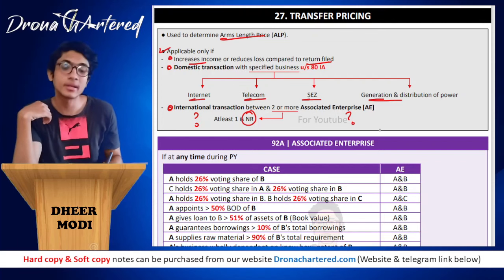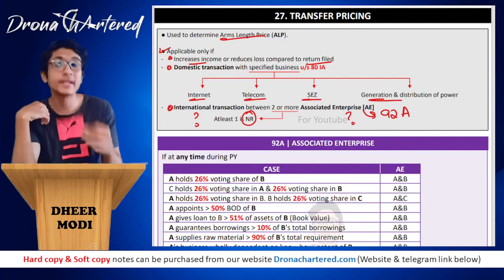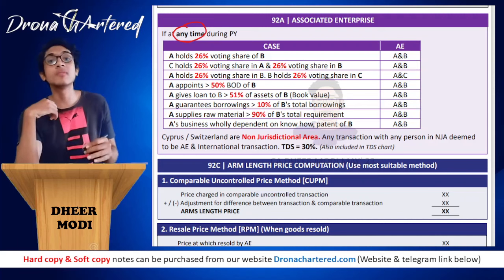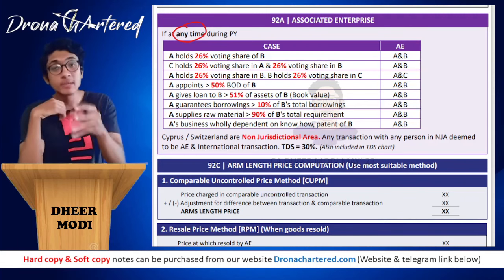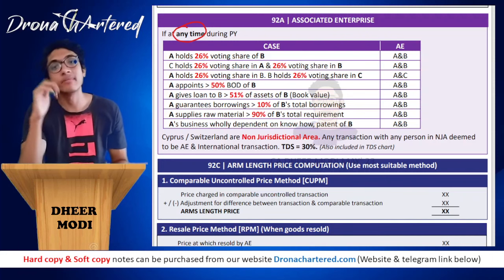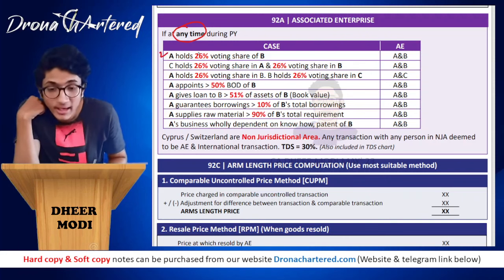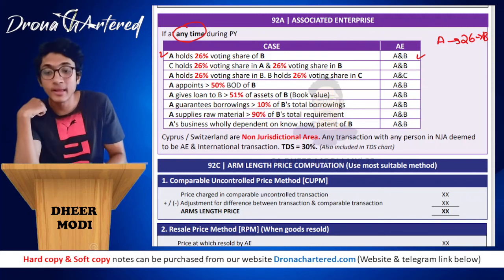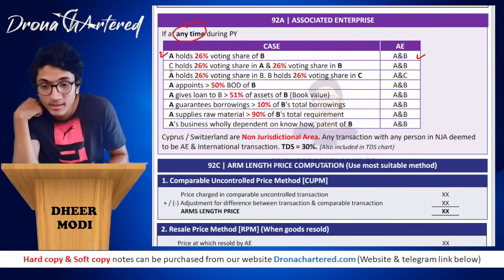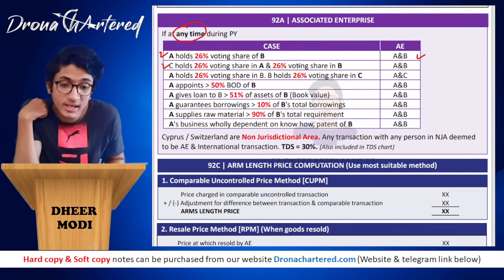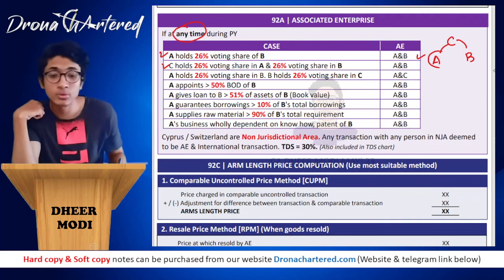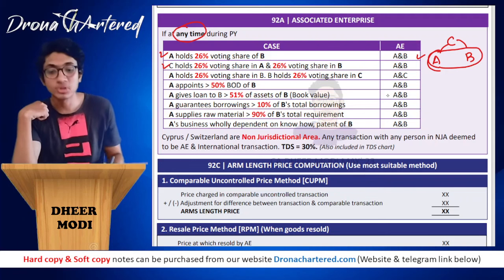Associated enterprise is defined under Section 92A. If at any time during the previous year certain conditions or percentages are reached, both parties will be considered associated enterprises. First condition: if A holds 26% or more voting share in B, both A and B are associated enterprises. Second condition: if C holds 26% voting share in both A and B, then C-A, C-B, and also A-B are all associated enterprises.